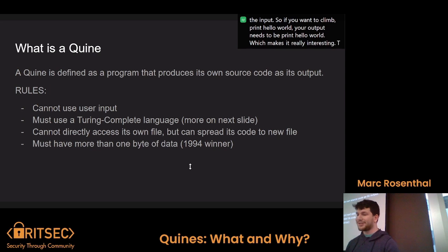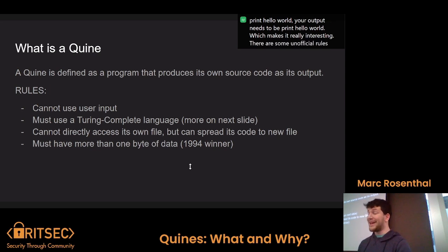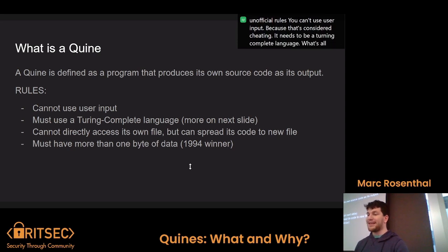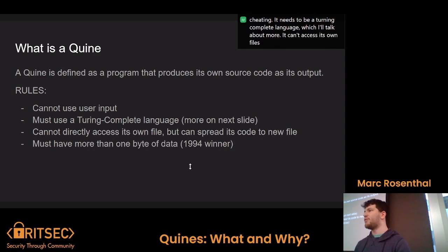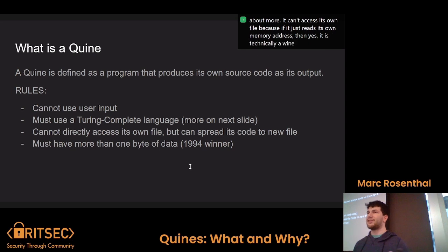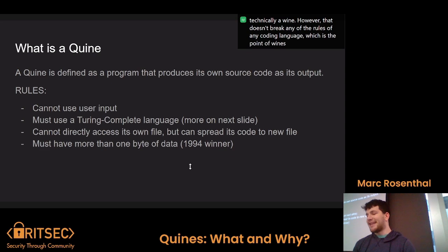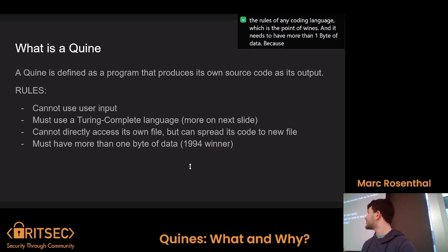There are some unofficial rules. You can't use user input because that's considered cheating. It needs to be a Turing complete language, which I'll talk about more. It can't access its own file, because if it just reads its own memory address, then yes, it is technically a Quine — however, that doesn't break any of the rules of any coding language, which is the point of Quines. And it needs to have more than one byte of data.